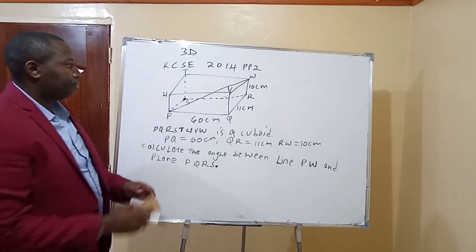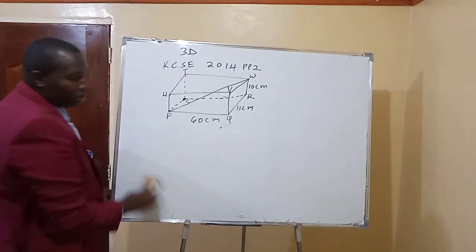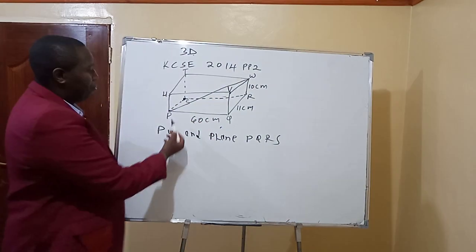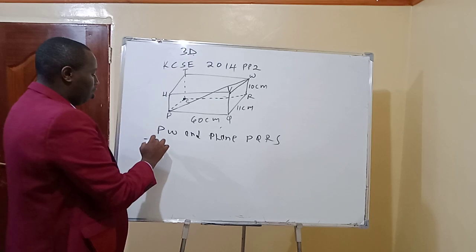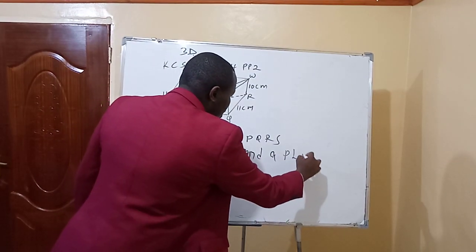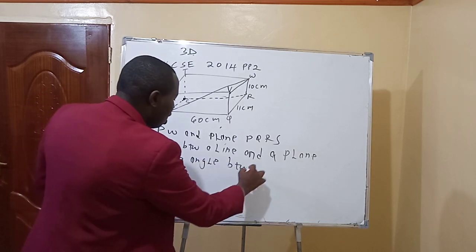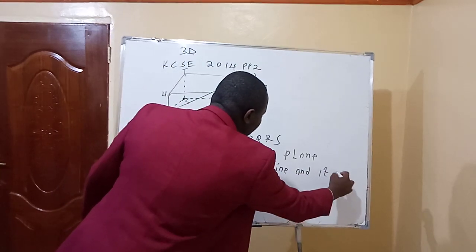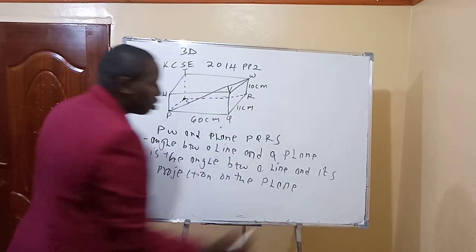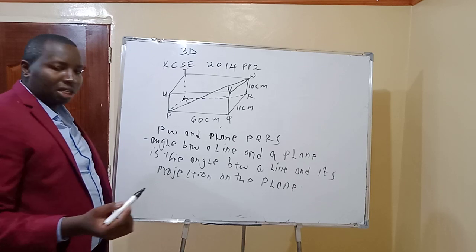You want to find the angle between the line PW and plane PQRS. The angle between a line and a plane is the angle between the line and its projection on the plane. That's the first thing to understand when you want to find the angle between a line and a plane — it is the angle between the line and its projection on the plane.